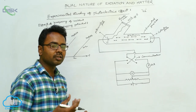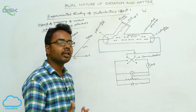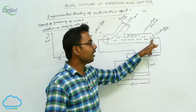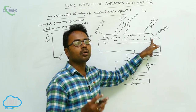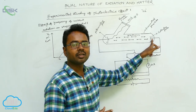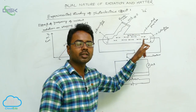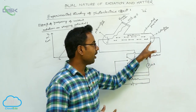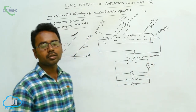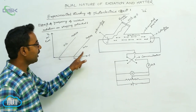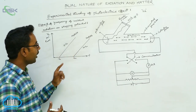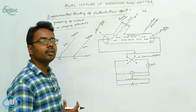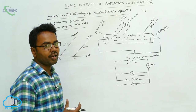As frequency increases, photon energy increases. Except for the work function, the remaining energy given as maximum kinetic energy of the electron also increases. As maximum kinetic energy of electrons increases, a more negative potential is required to stop the electrons. That is why stopping potential also increases with frequency. The stopping potential and maximum kinetic energy of photoelectrons do not depend on the intensity of the incident radiation.